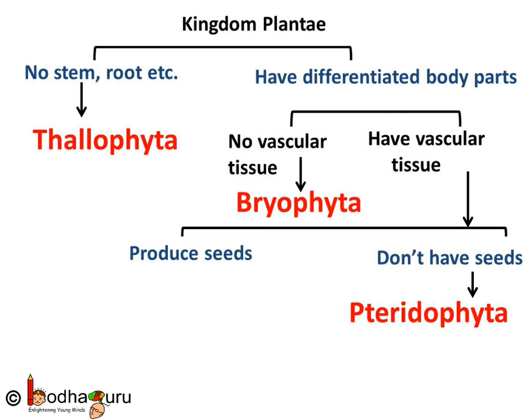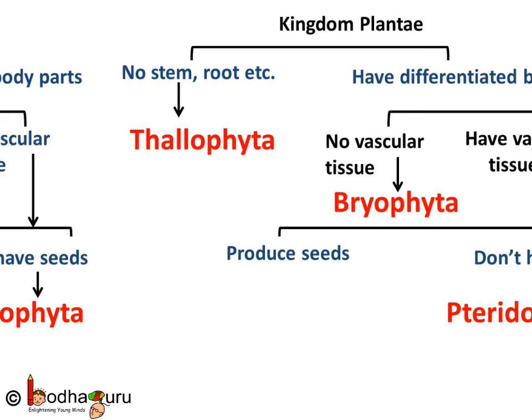If the plant has vascular tissues, we see if it produces seeds or not. If not, it is a Pteridophyte, i.e., it reproduces through spores. For example, fern.